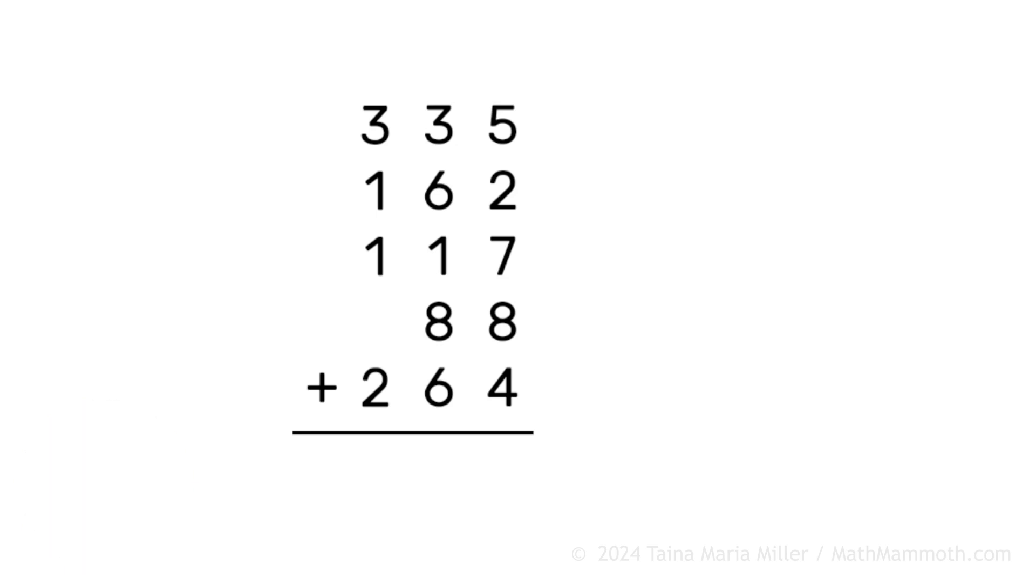First we will round 335 to the nearest 10. So then that is 340. And then 162, what's that Mathie? Yep, 160. 117 rounds to 120, and 88 goes to 90 rounded, and then this last one 260.